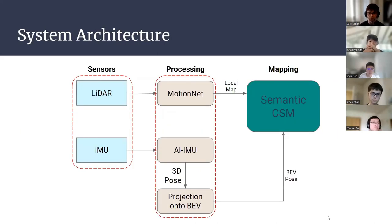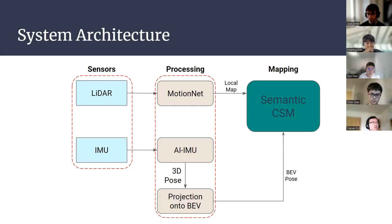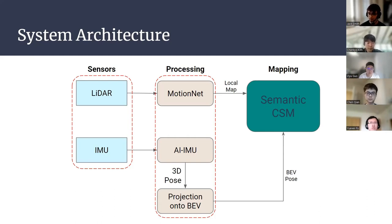Here's a diagram of the system architecture. The only two sensors necessary to implement our project were LiDAR and IMU. The LiDAR data goes straight to MotionNet, which generates the local maps. The IMU data goes straight into AI-IMU, which generates a 3D pose. We then do a bit of projection to get the bird's-eye view pose, and combine these two using mapping techniques to generate the global map.